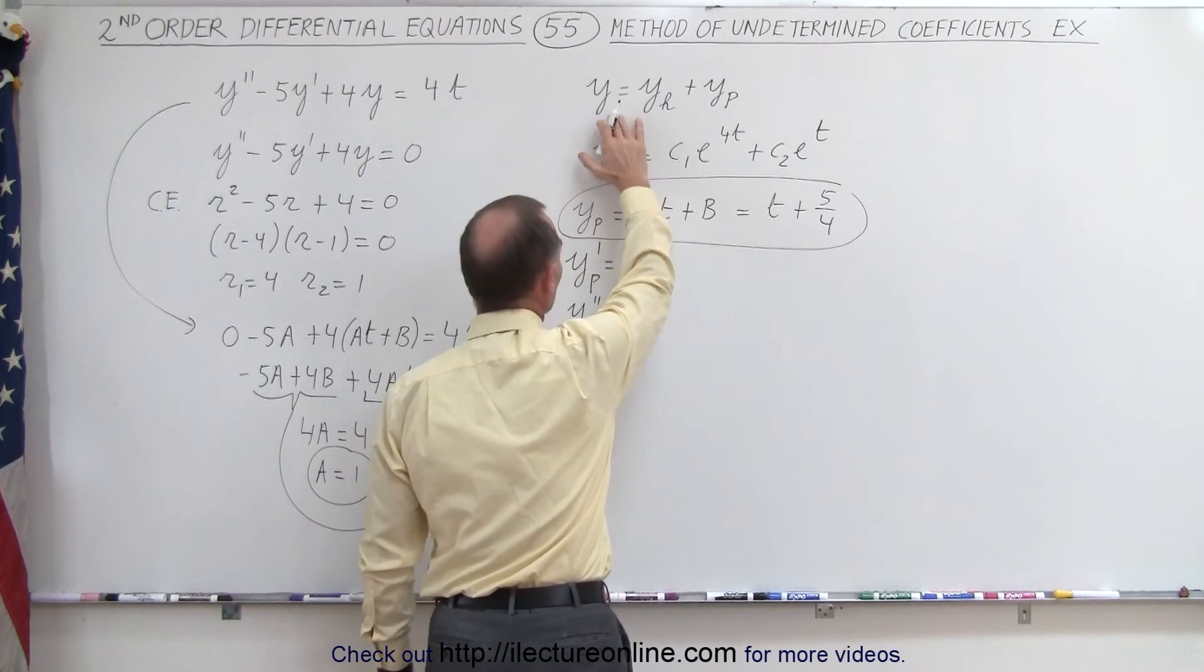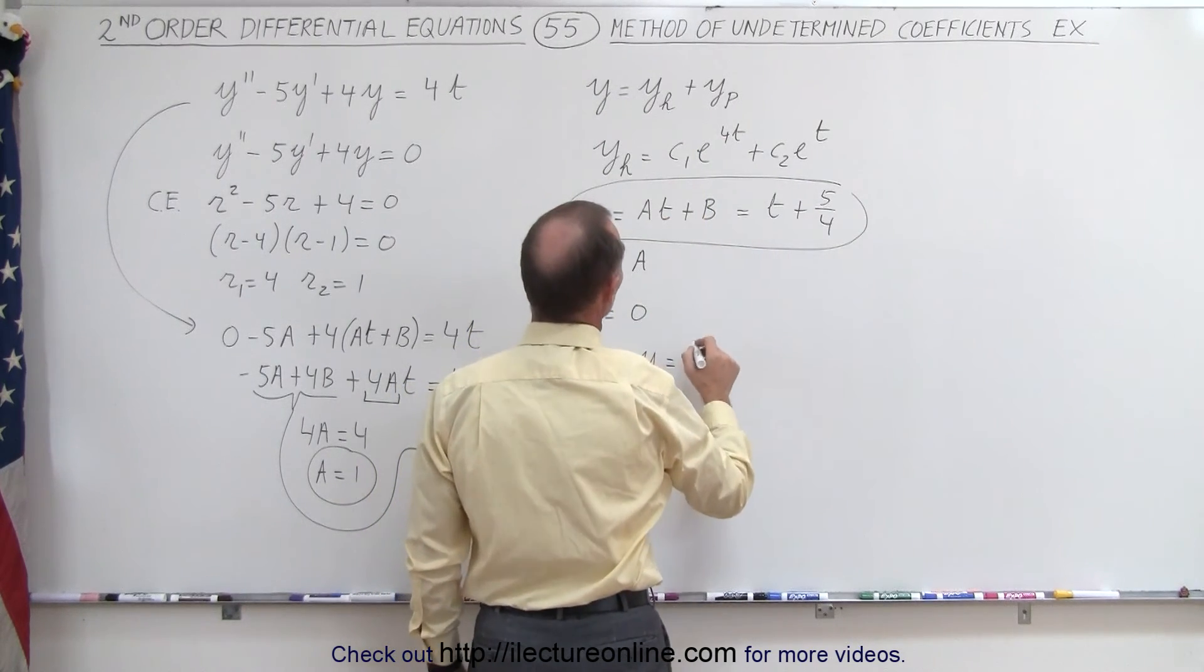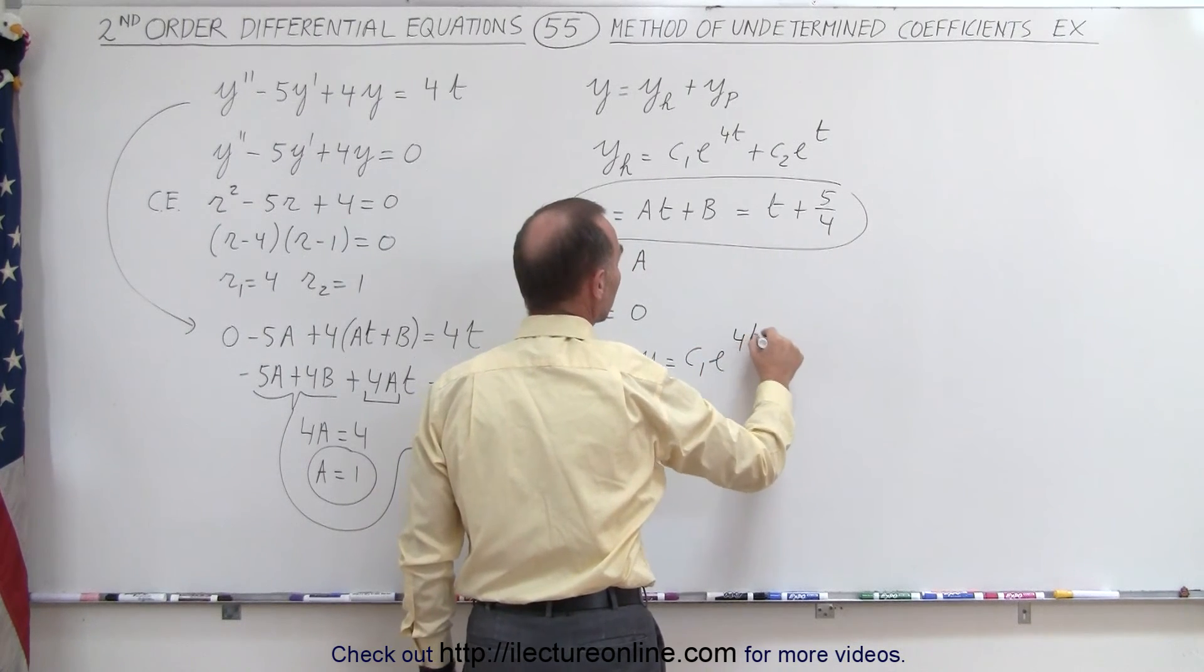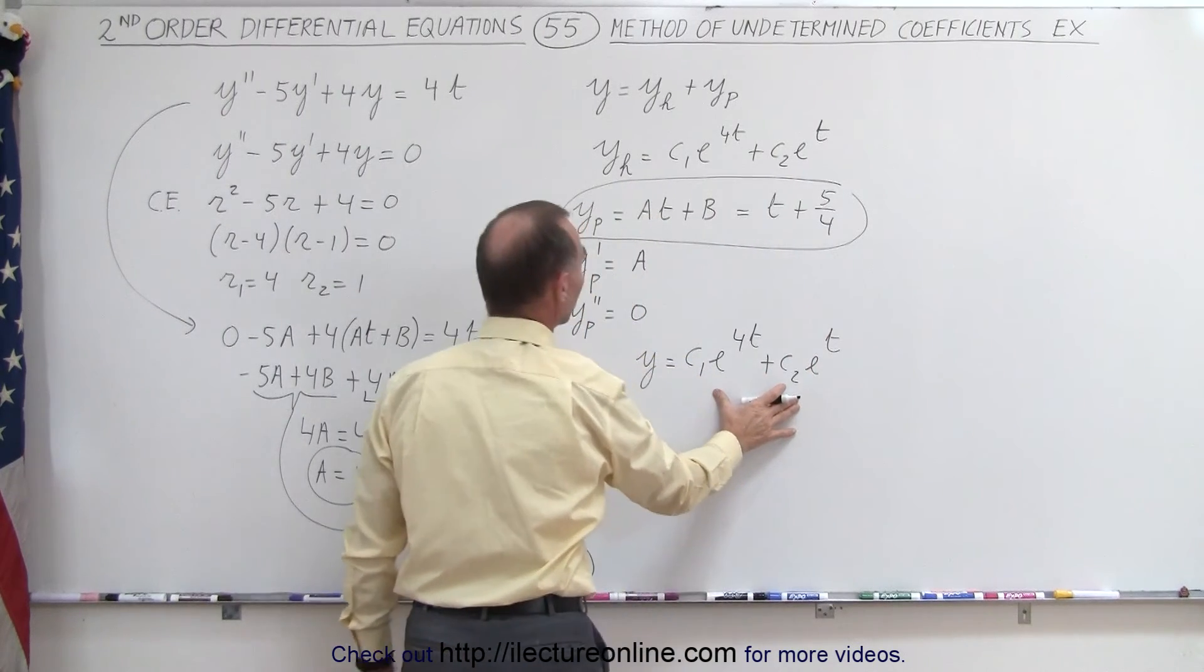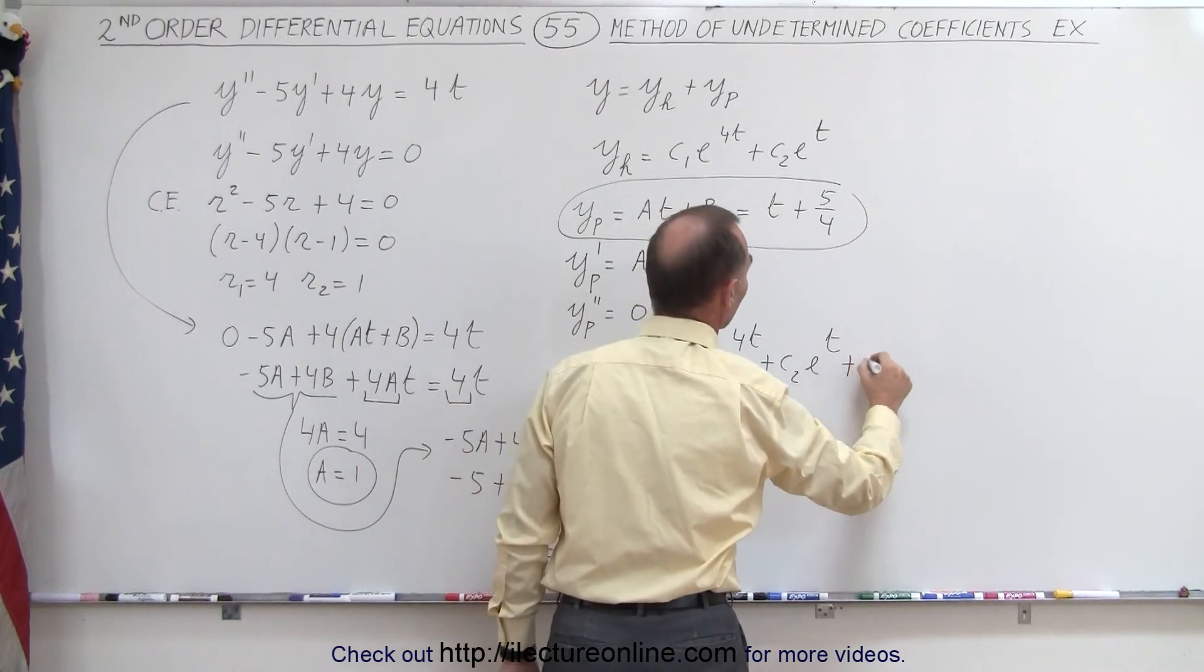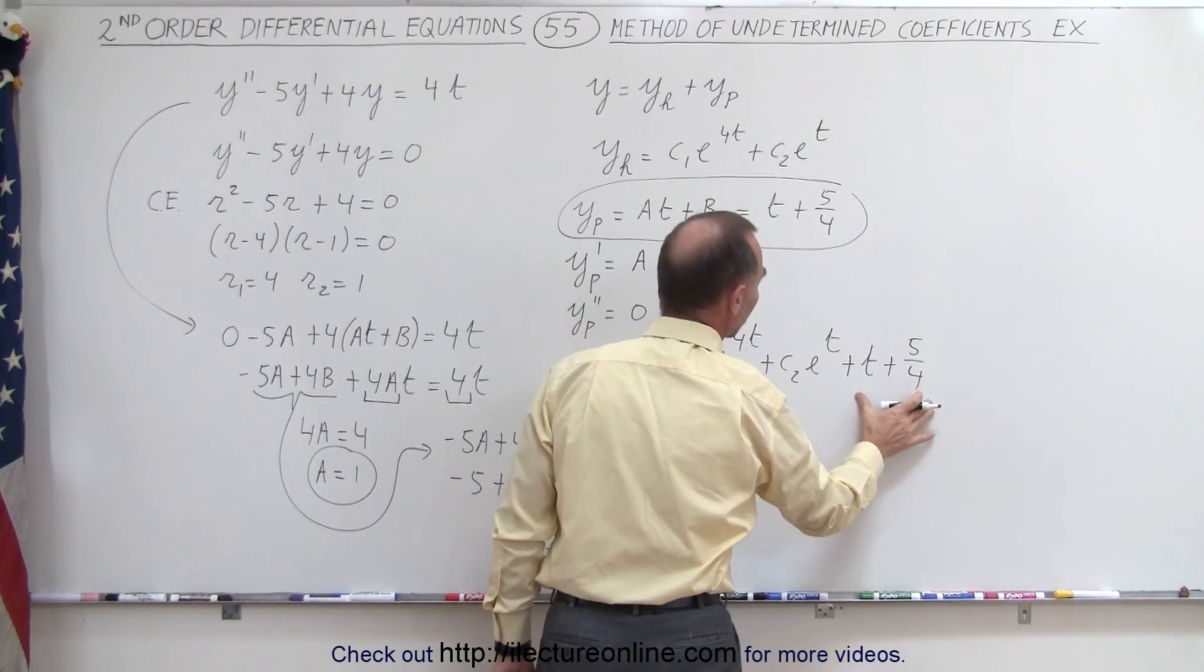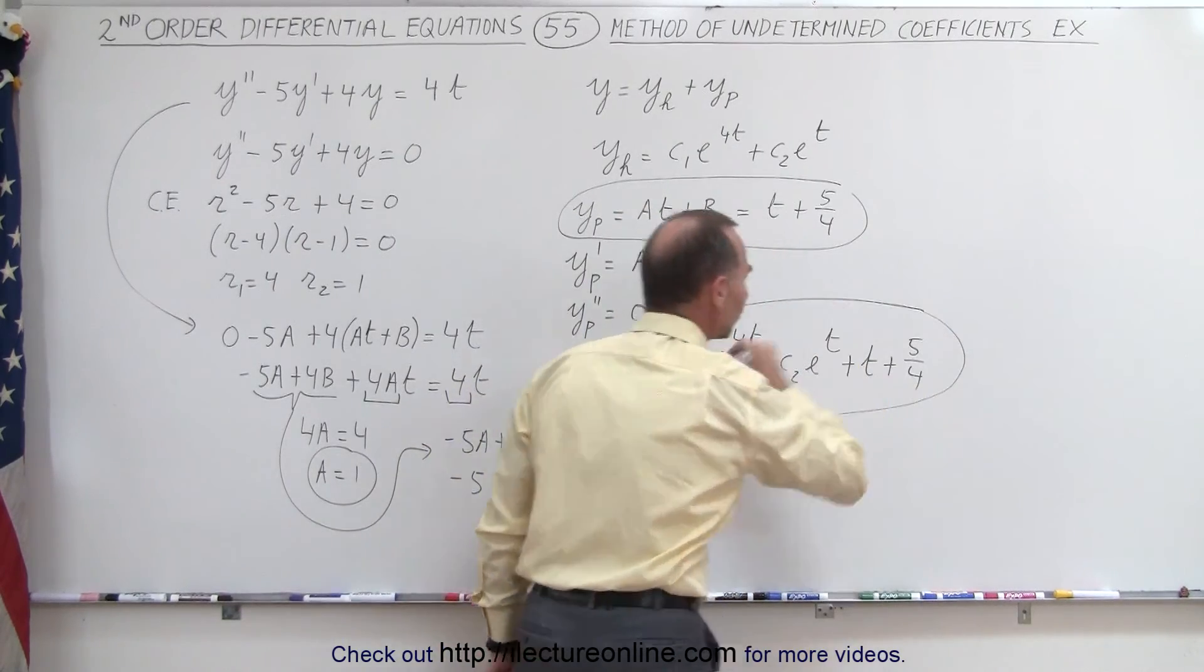And then to find the total solution, the general solution, y is going to be equal to y_h, which is c₁e^(4t) + c₂e^t, which is the homogeneous part of the solution. And then we add to that t + 5/4, which is the particular part of the solution. And that gives us the whole general solution.